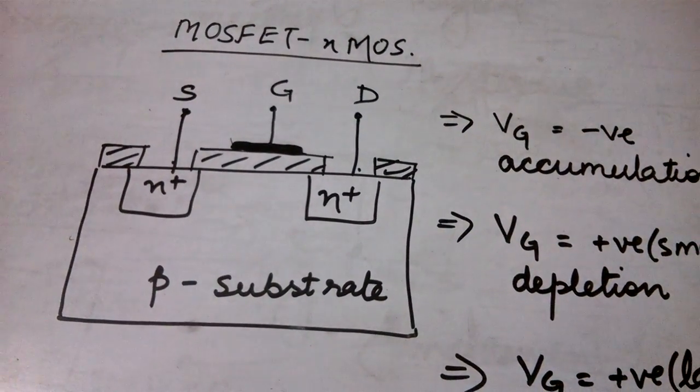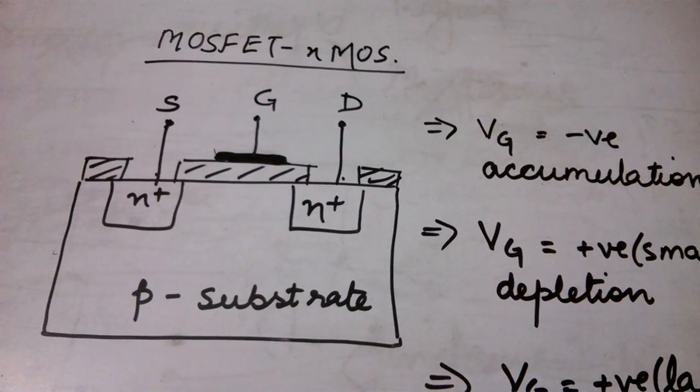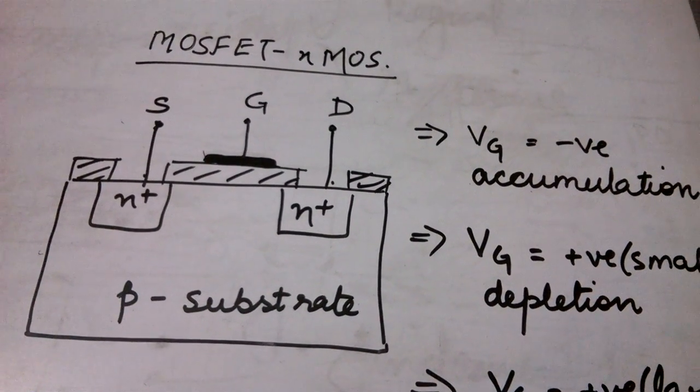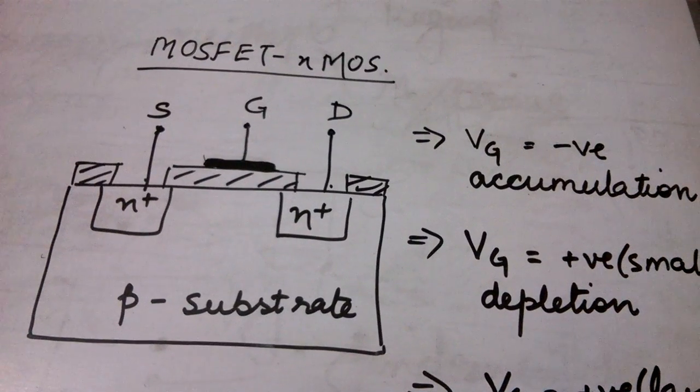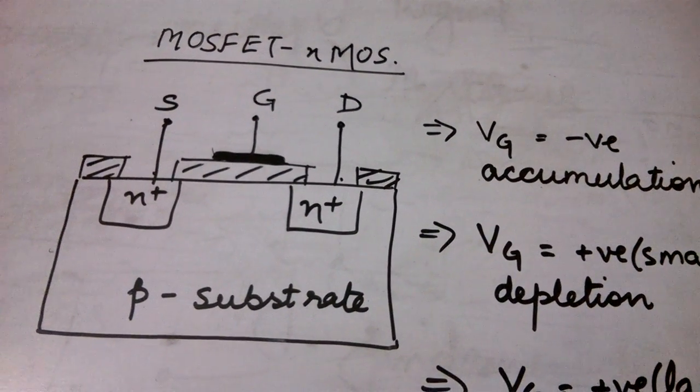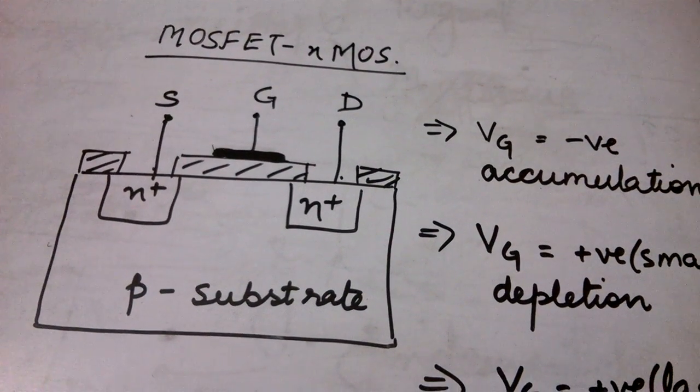So what is the full form of a MOSFET? MOSFET is basically your metal oxide semiconductor field effect transistor. First of all let us try to understand the significance of this name.